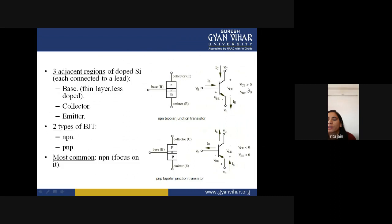VC is always greater than zero and VBE is always greater than zero. The NPN bipolar junction transistor is mostly used in many applications. You can distinguish NPN from PNP transistors by the direction of the arrow in the symbol: in NPN the arrow points downward, in PNP it points upward, indicating opposite current directions. Current always flows from positive to negative direction.